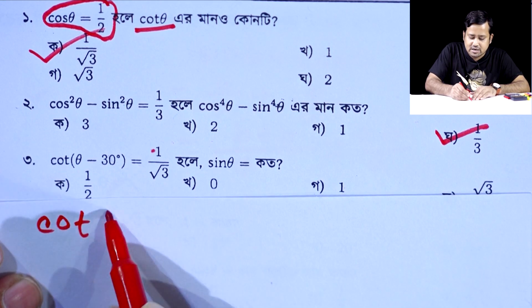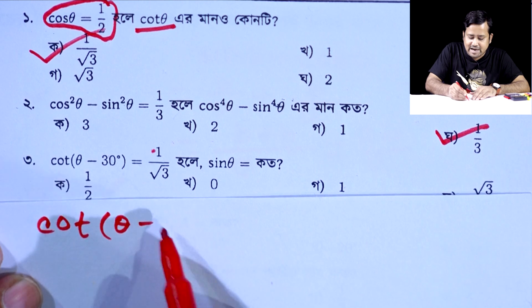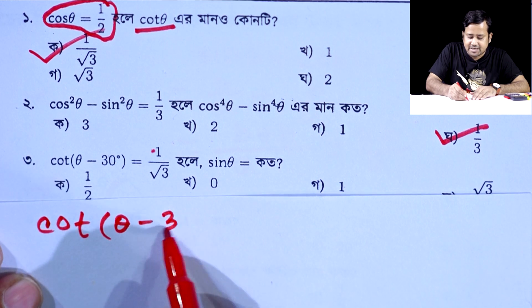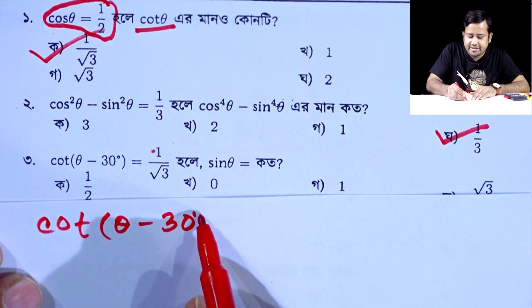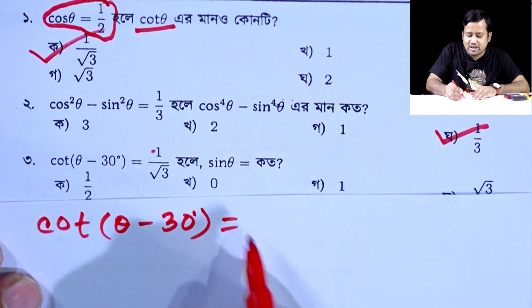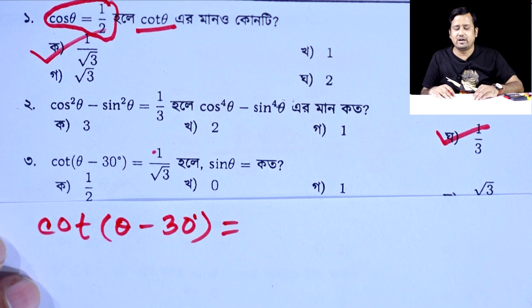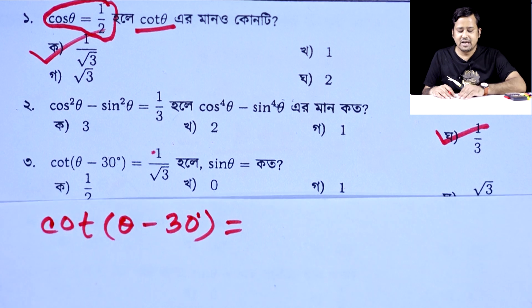Now, cos(theta minus 30 degrees) equals 1 by root 3.